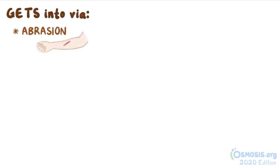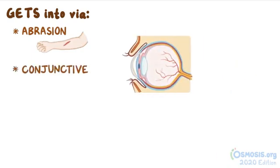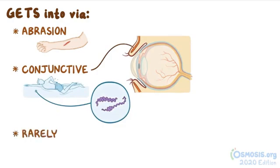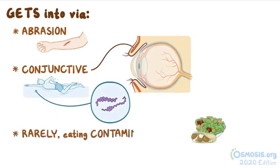Most commonly, leptospira gets into the host system by abrasions or cuts on the skin. Alternatively, it can get in through the conjunctiva of the eyes, especially in people who go swimming in contaminated waters. And rarely, infection can also follow eating contaminated food.